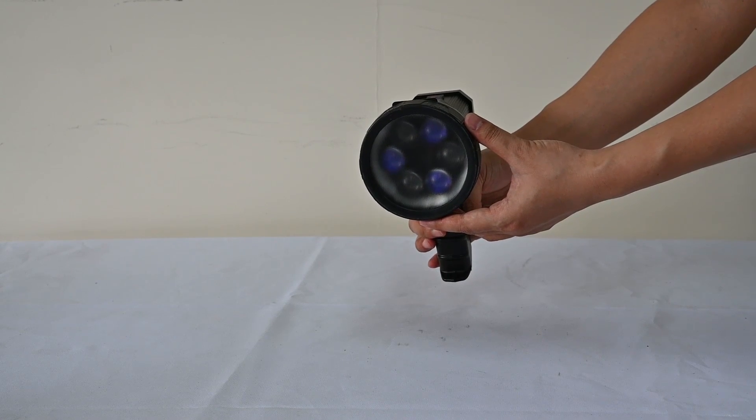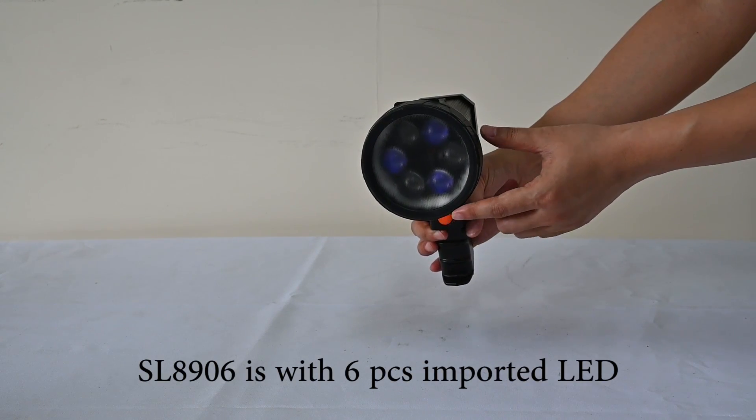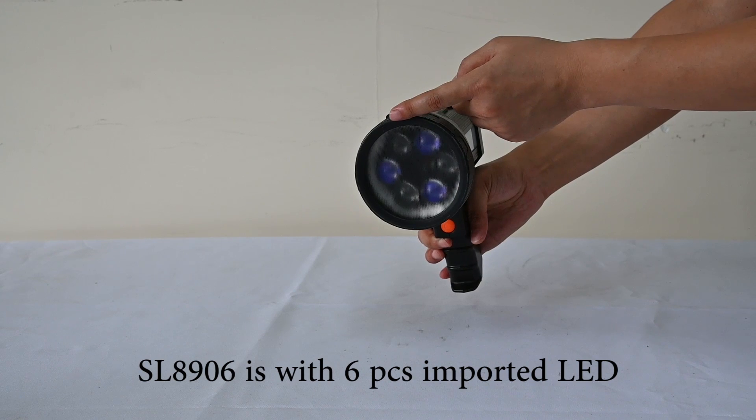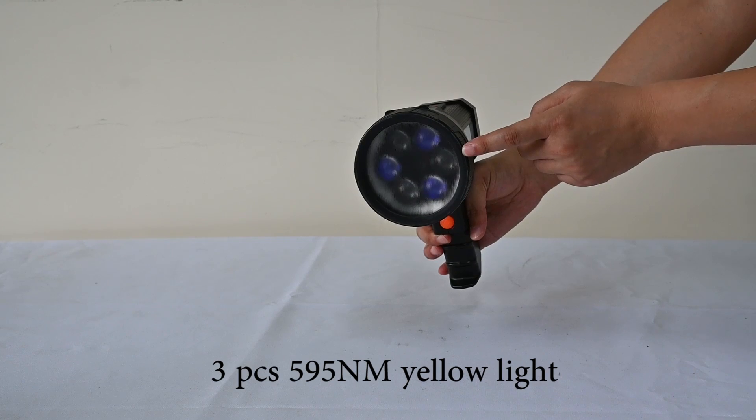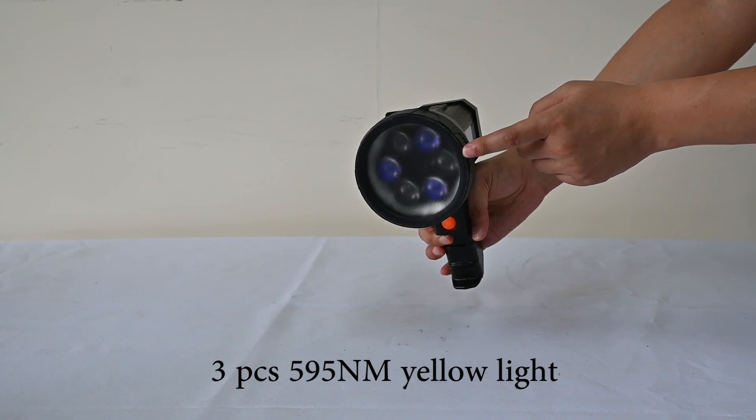You see, Salom 8906 is with 6-piece imported LED, 3-piece 525nm green light, 3-piece 595nm yellow lights.